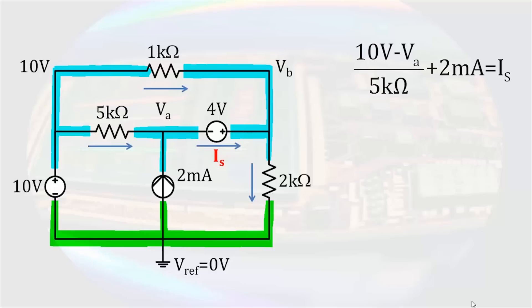At node B, IS and the current through the 1 kilo-ohm resistor enter the node, while the current through the 2 kilo-ohm resistor leaves. So we can write IS plus 10 volts minus VB divided by 1 kilo-ohm equals VB minus 0 volts divided by 2 kilo-ohms. We now have two equations with three unknowns.